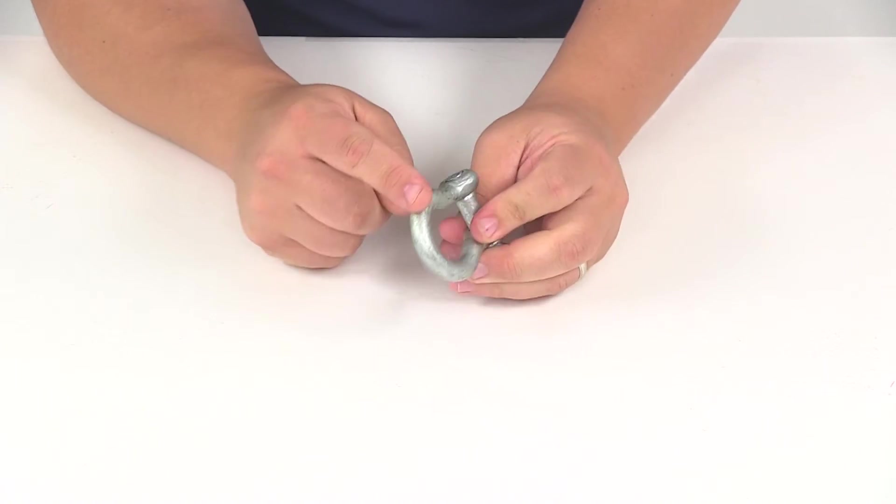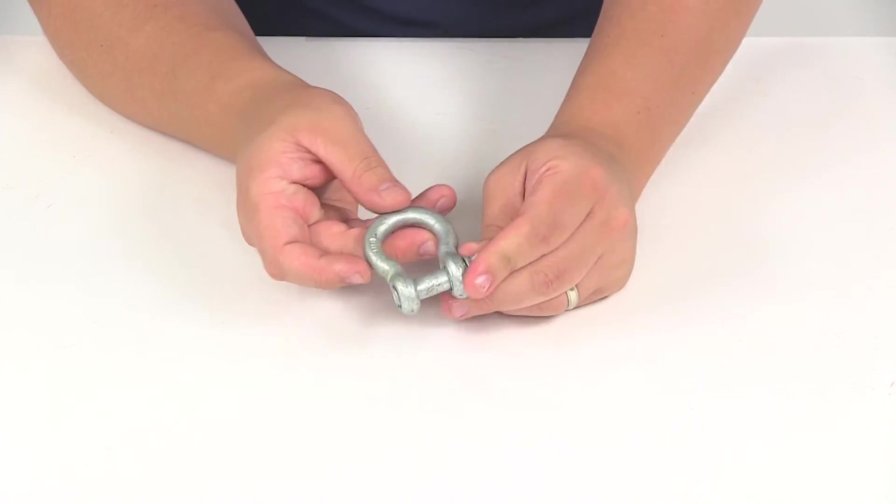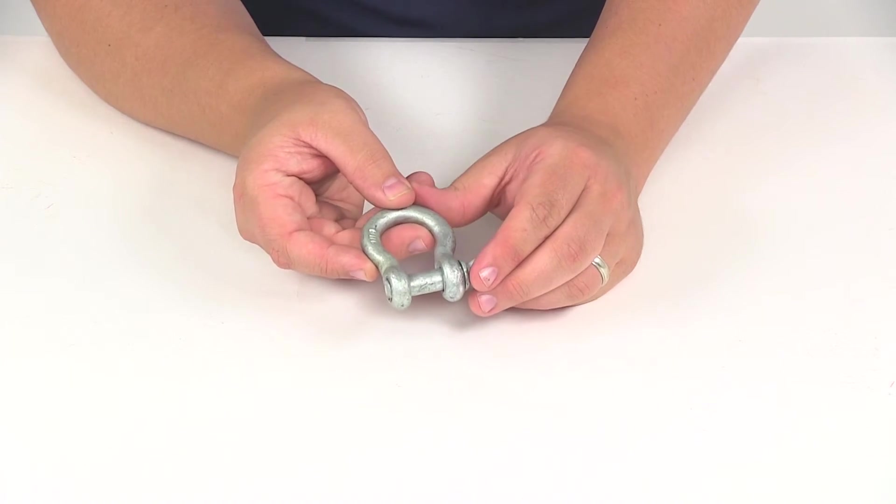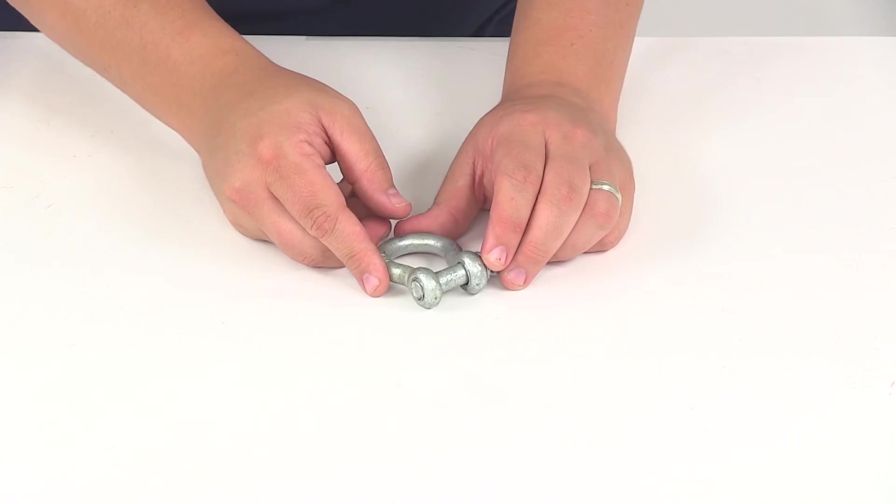The diameter of the shackle is going to measure 7/16ths of an inch. That's going to do it for our review of part number GS06. This is the Brophy Shackle with a screw pin design.